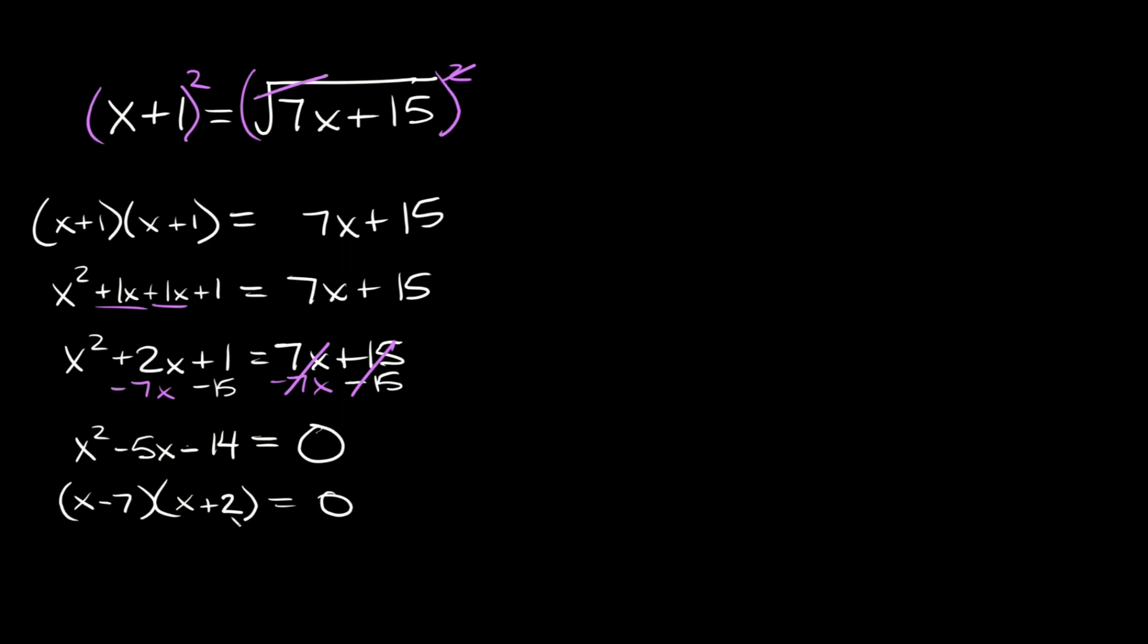So to solve for x, just set each one equal to 0. So in this set of parentheses, we would get that x is equal to positive 7, and on this one, we would get that x is equal to negative 2. So as you can see, we got two solutions. Now we just need to plug these back into the very original equation and make sure that they both work.